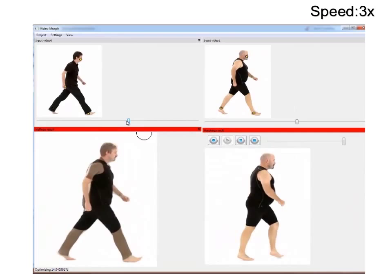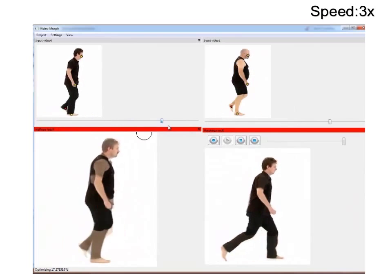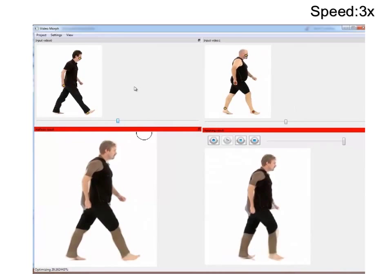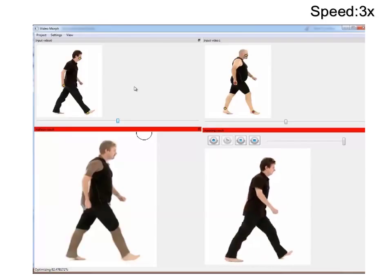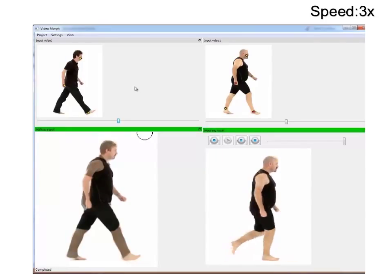Once satisfied with the preliminary result on the bottom right, the user can simply wait for the full optimization to be carried out all the way to the finest level. Finally, the user can verify that the morph is appropriate and no further changes to the correspondences are required. The entire process for this video took just under five minutes.